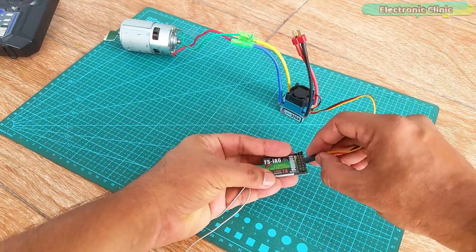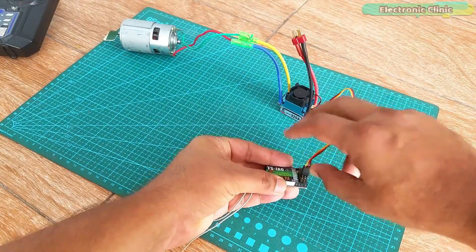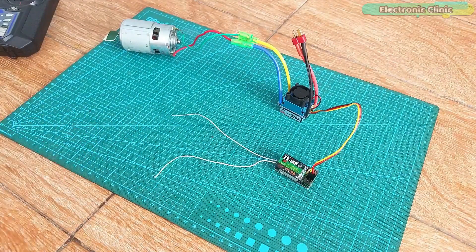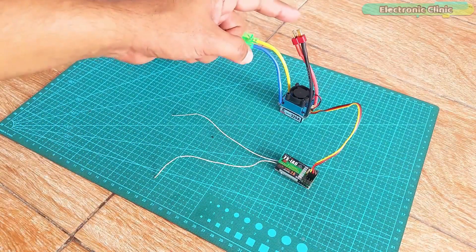Make sure the signal wire, 5 volt wire and ground wire connects with the exact pins on the receiver. That's all about the connections. Now we will connect the lipo battery and then we are good to go.